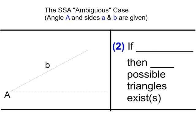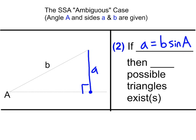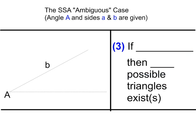Case two: little a is just long enough to reach the ground, forming a right triangle. This is where a = b · sin(A), and we get exactly one right triangle. It's not just a possible triangle — we can definitively say one right triangle exists in this case.